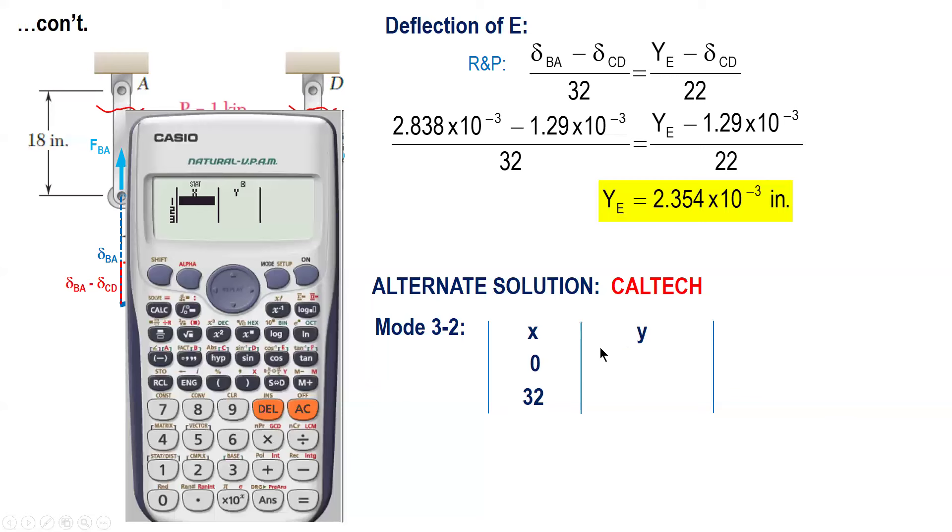The Y value at 0 is delta BA which is negative 2.838. We use negative because it's downward. And then at a distance of 32, at CD, the Y is delta CD, negative 1.29.